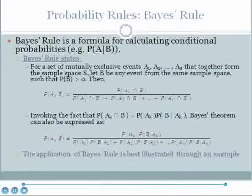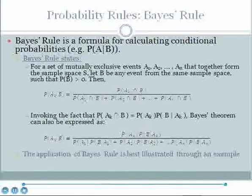Bayes' Rule states that for a set of mutually exclusive events A1, A2, etc., that together form a sample space S, if B is any event from the sample space and the probability of B is greater than zero, then the probability of some event from the sample space, call it AK, occurring given that B has occurred, is equal to the probability of the intersection of AK and B divided by the probabilities of each event A from the sample set intersected with the probability of B. Invoking what we know about the probability of an intersection derived from the multiplication rule, this can be simplified to the equation shown lowest on the screen. You should copy this equation and be familiar with how it works.